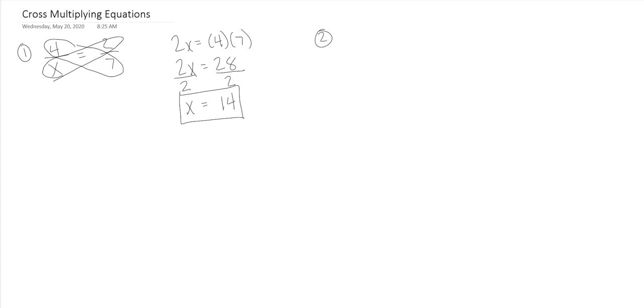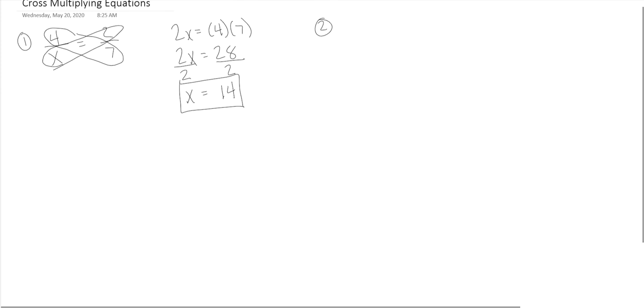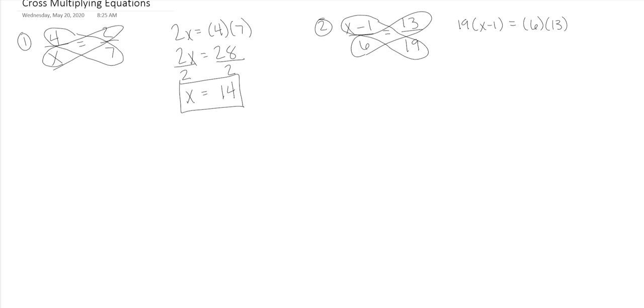Let's do the second problem. This one's going to have a little bit more algebra in it. So X minus 1 over 6 is equal to 13 over 19. You still do the same process though. You cross multiply. We're gonna have 19 times X minus 1 and then 6 times 13. On the left side we're gonna distribute this 19 to everything on the inside. So we'll have 19X minus 19 and then 6 times 13 which is 78.